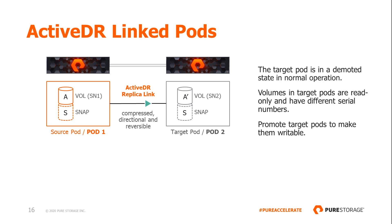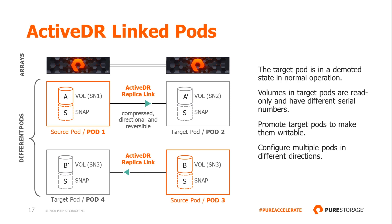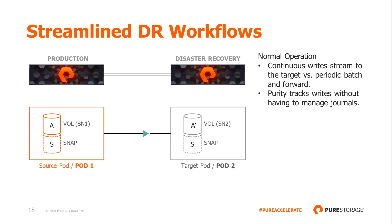When a target pod is promoted, the pod is considered active and the volumes are then made readable and writable. ActiveDR supports multi-directional replication for different datasets — multiple pods can be configured in different directions between two FlashArrays. Tracking the stream of changes rather than periodically performing snapshot differencing to drive replication enables ActiveDR to deliver extremely low RPOs. During normal operation, the source pod continuously streams the compressed data to the target pod. Using built-in and continuous change tracking, it automatically manages and stores these changes using Purity's native, space-efficient technologies, without additional space or complexity, and with no external devices required.